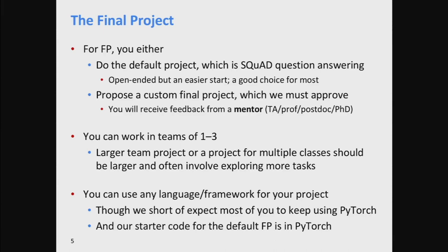For assignments one through five, you have to do them by yourself. For the final project in either form, you can do it as a team — one, two, or three people. If you're a bigger team, we do expect you to do more. One way is having more people. The other thing that comes up is that sometimes people want to do a final project for more than one class at the same time — for instance, a joint project with Emma's reinforcement learning class.